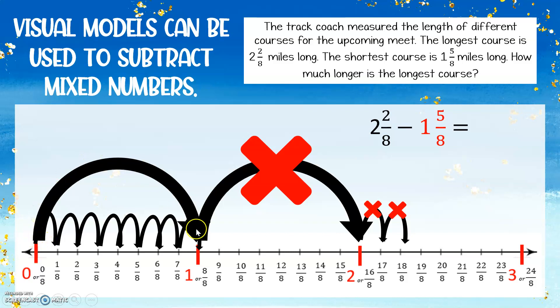Remember, 1 whole jump is the same as 8 eighths. So now that I've changed that 1 whole to my 8 eighths, I can figure out how much will be left. So I've already done 1 eighth, 2 eighths, 3 eighths, 4 eighths, 5 eighths.